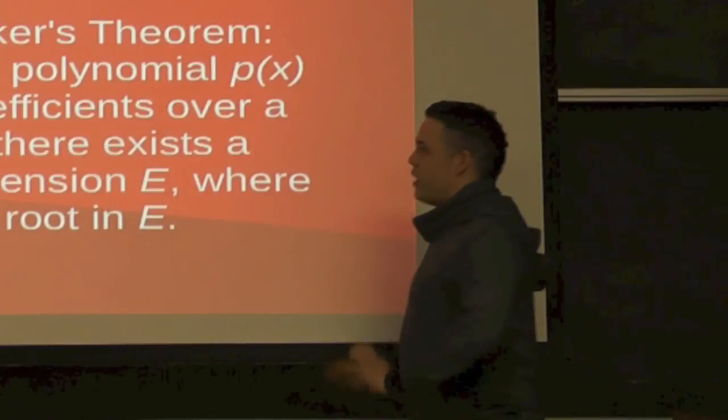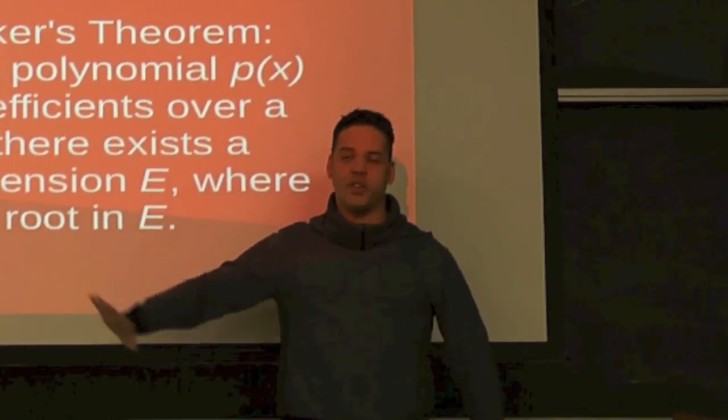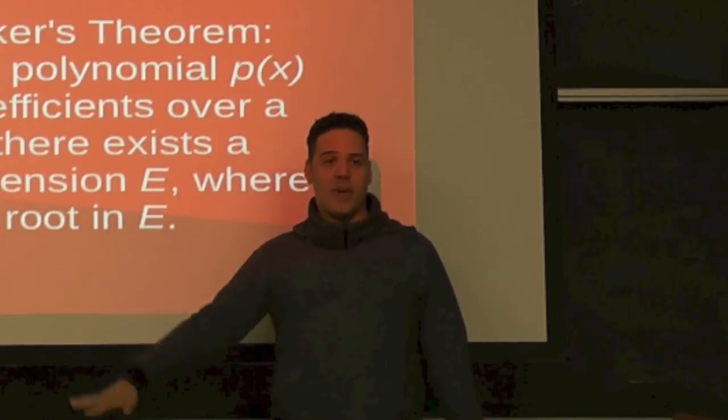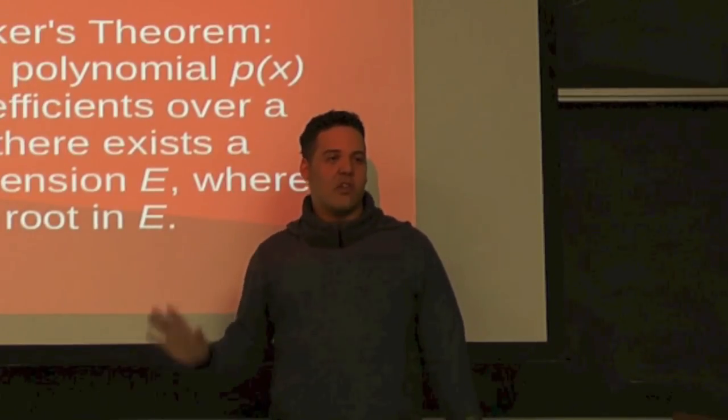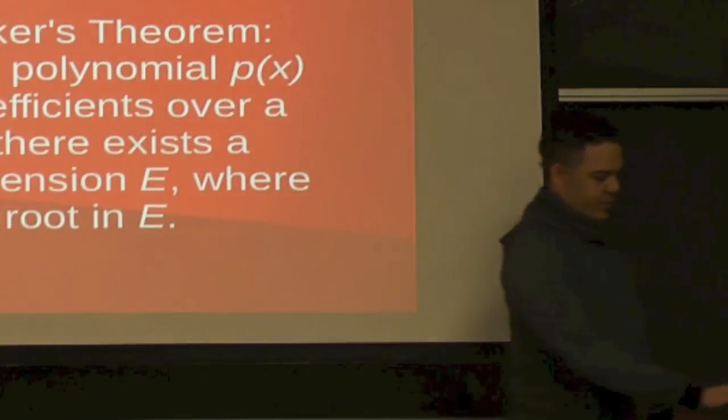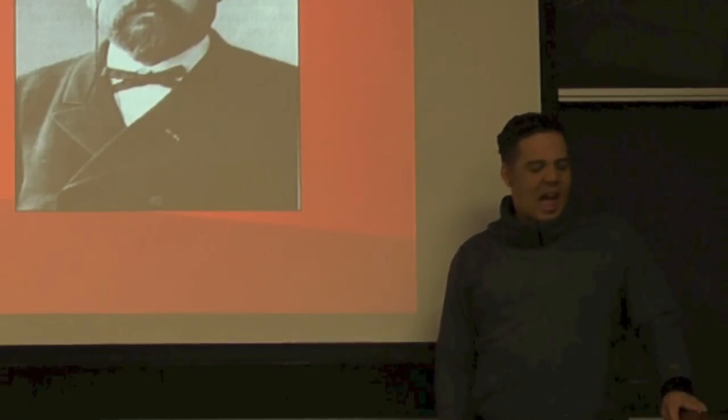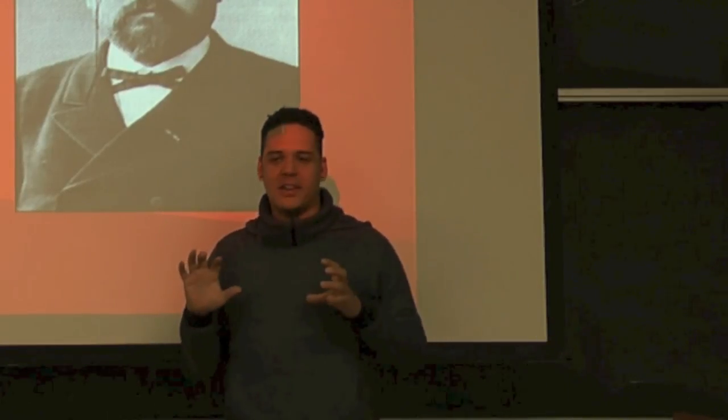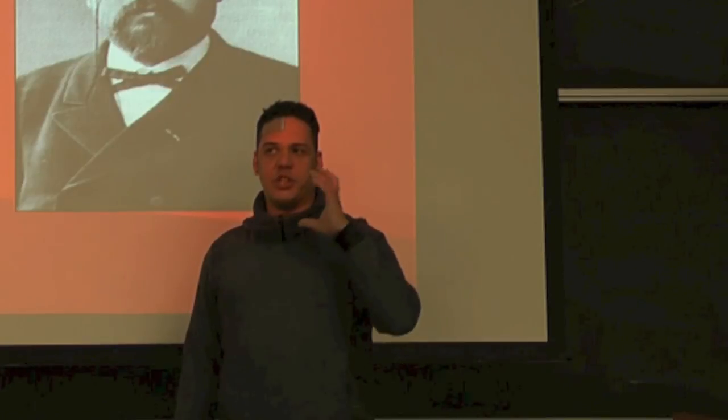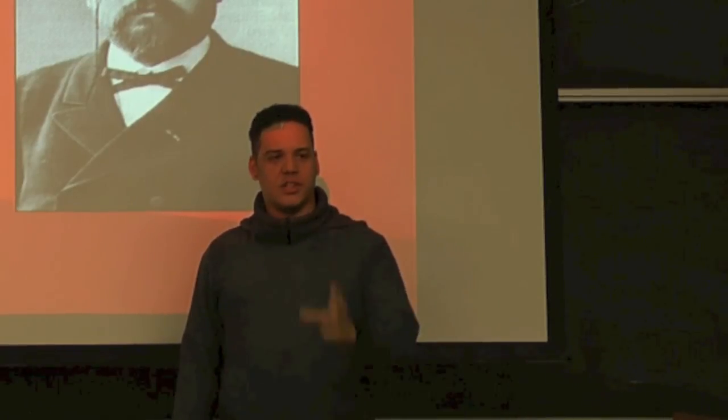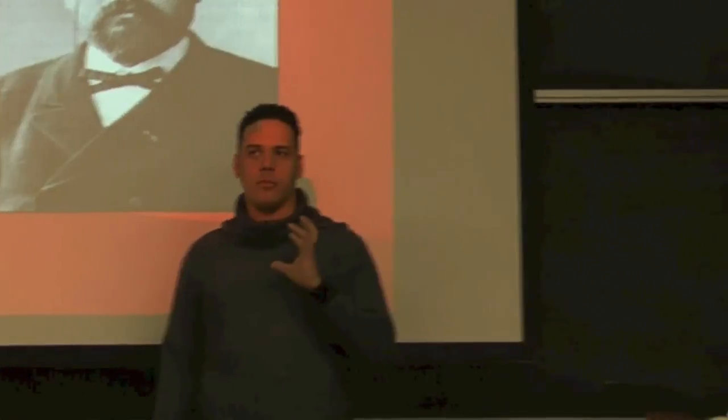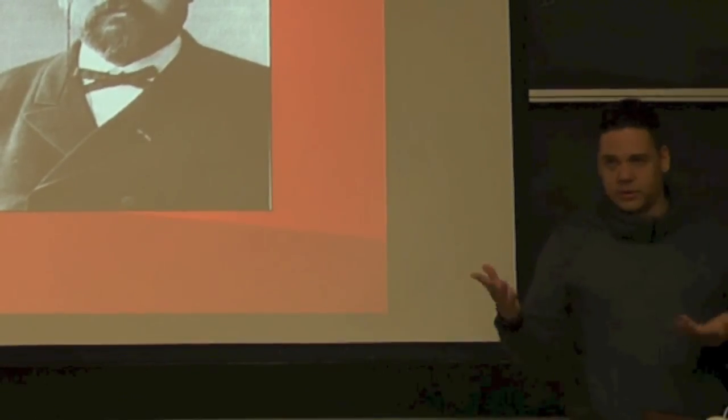Kronecker was active at the same time that Cantor was and was saying all sorts of horrible things about him and the mathematics that he was doing. Called him a scientific charlatan, a renegade, and a corrupter of youth. There's one historian that I basically studied a lot to get the information for this talk, and I really want to sit down with him and ask him: what does a mathematician do to earn the title of a corrupter of youth? I have questions.